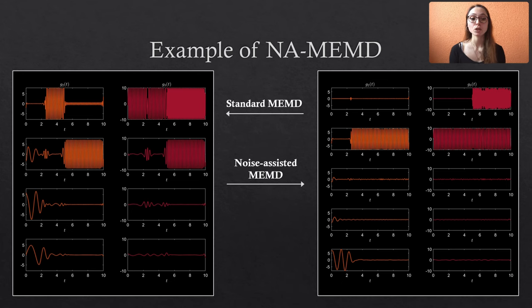As a side note, you can also use this approach when you only have a single variate signal. You then create multivariate data by appending your data with noise variates and then simply use the MEMD.